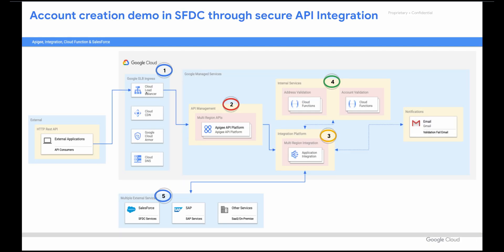Let's get started and have a look at the architecture of this demo. We have an external application representing an external API consumer who will make calls to our REST API. They will connect to a Google Cloud Load Balancer which exposes our Apigee — we can choose to make it internal or external. We have Cloud Armor providing web application firewall on top. Apigee then talks to Application Integration behind the scenes, where we have different patterns implemented, Cloud Functions, email validation triggered, and then we connect to Salesforce.